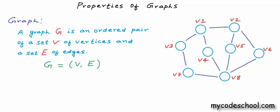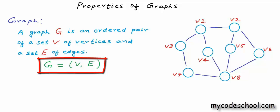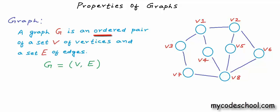A graph can be defined as an ordered pair of a set of vertices and a set of edges. We use the formal mathematical notation G = (V, E) to define a graph, where V is the set of vertices and E is the set of edges. Ordered pair is just a pair of mathematical objects in which order matters — it matters which element is first and which is second. To denote the number of elements in a set, which we also call the cardinality of a set,